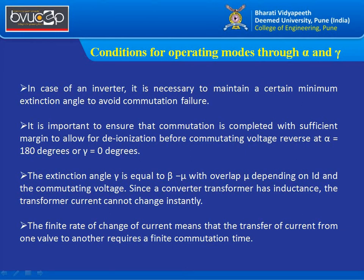Since a converter transformer has inductance, the transformer current cannot change instantly. This makes it difficult to change these parameters quickly, as gamma is dependent on ID. The finite rate of change of current means the transfer of current from one valve to another requires a finite commutation time — that is why some delay is expected in these operations.